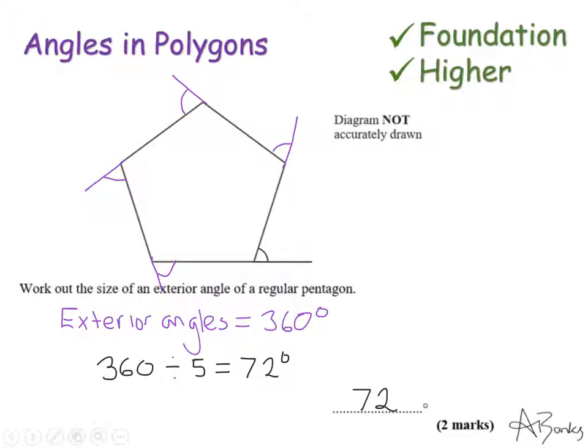That's how to find the exterior angle of a regular pentagon. If your shape isn't regular, the exterior angles will still add up to 360, but they won't necessarily all be the same.